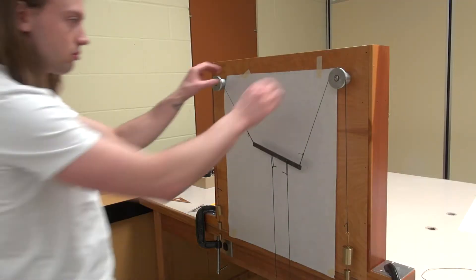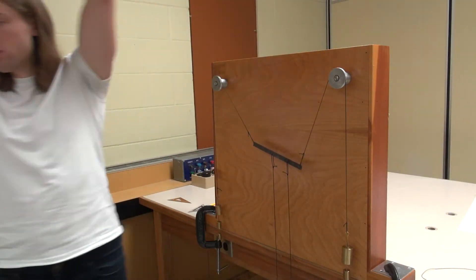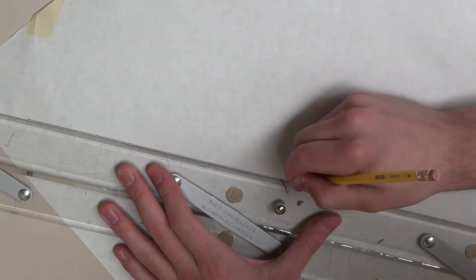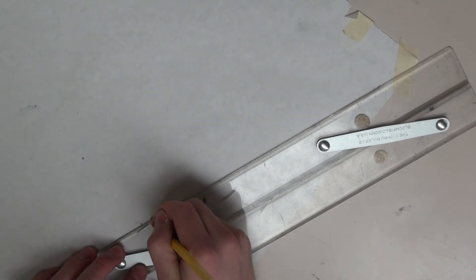Now carefully remove the paper from the board and lay it flat on the bench. Draw lines from the points indicating the positions of the holes on the bar, to the points indicating the positions of the corresponding ends of the three strings.